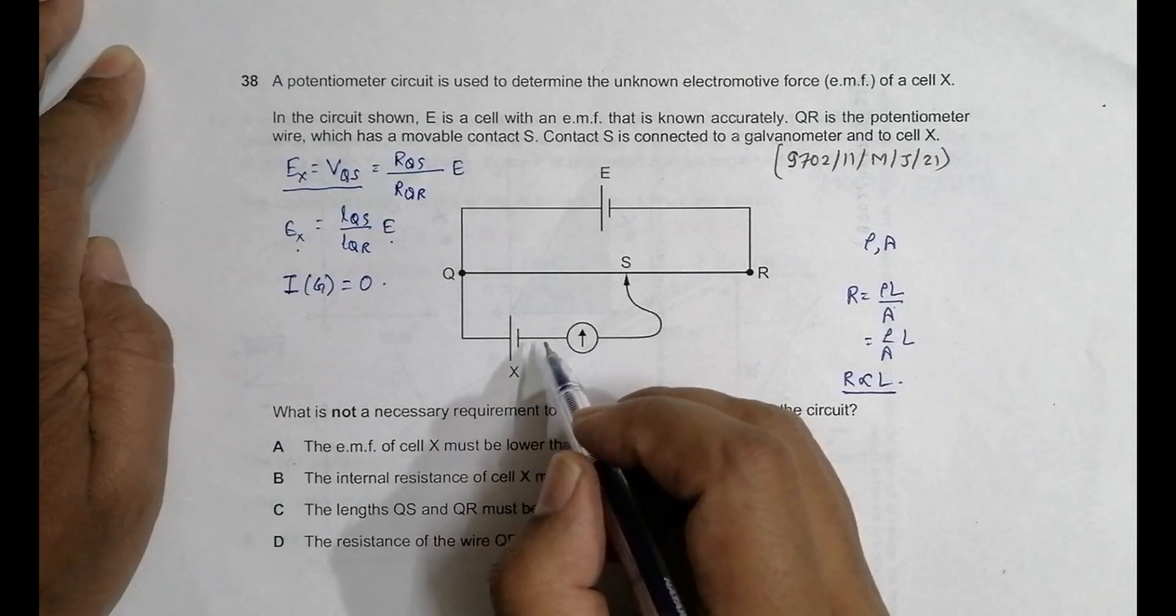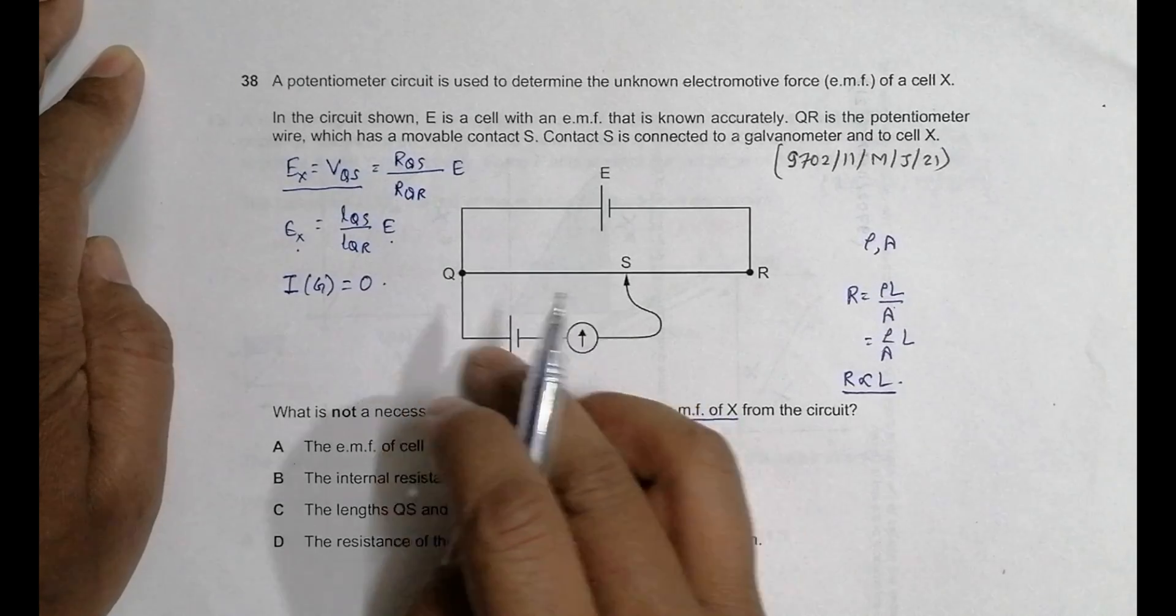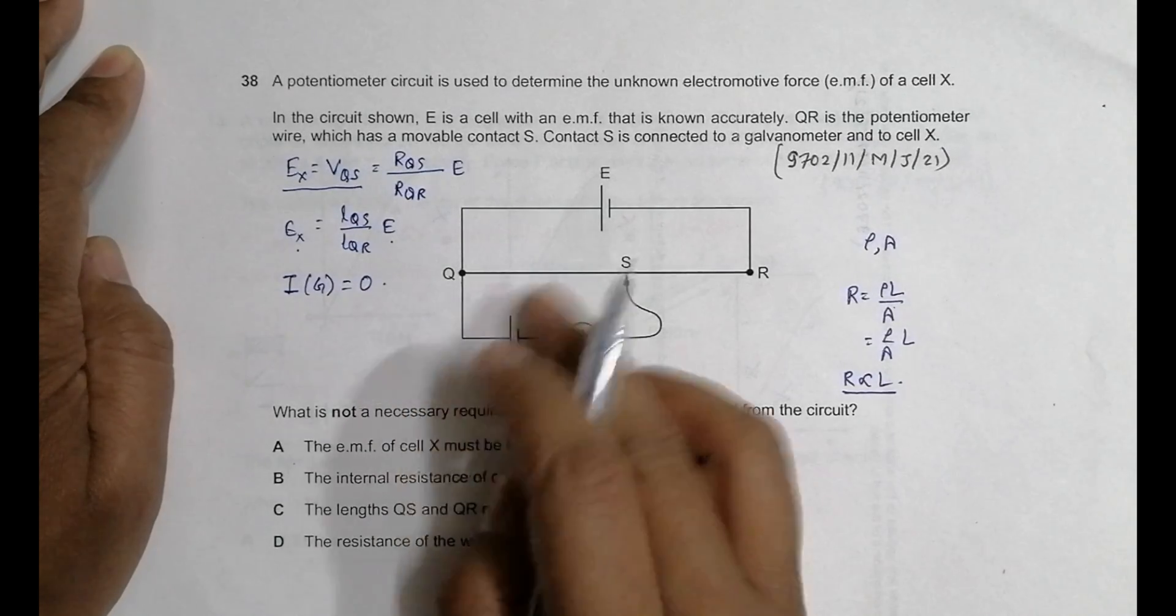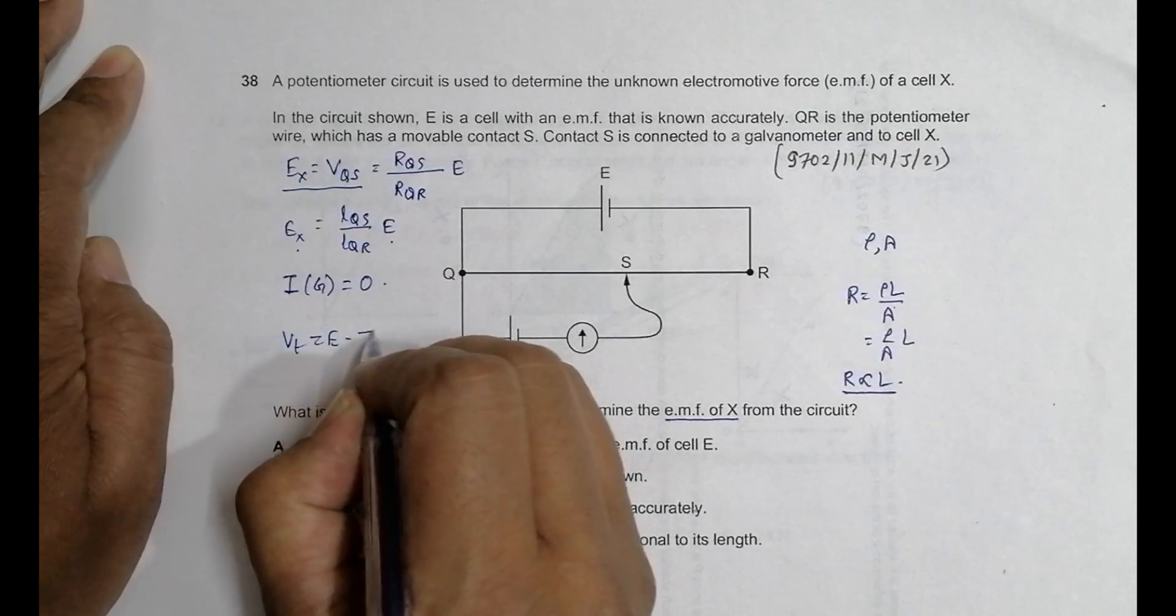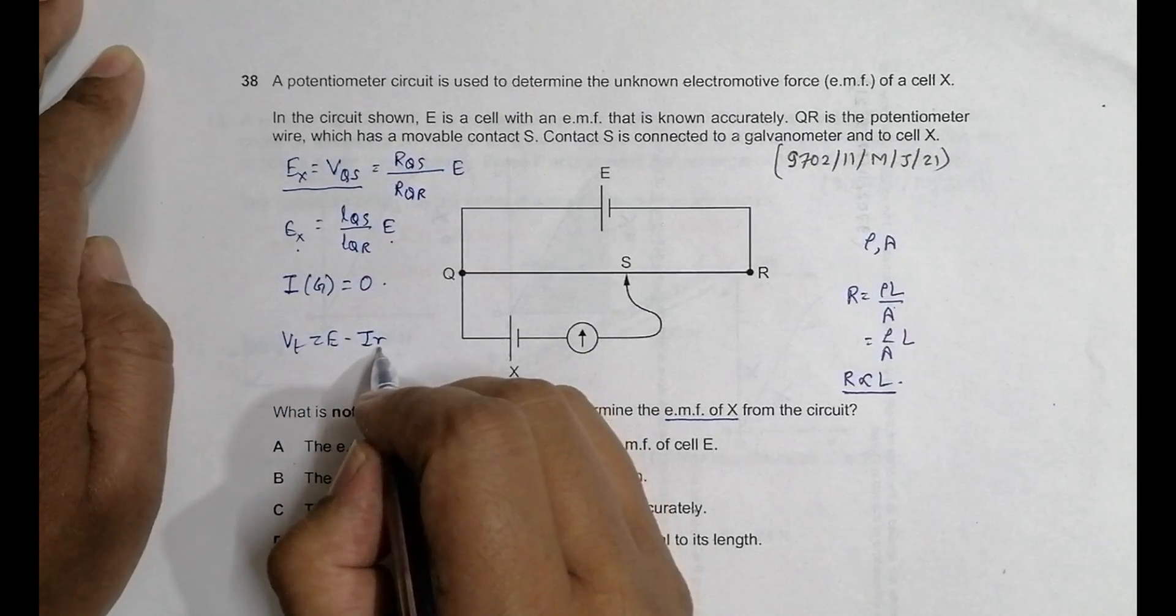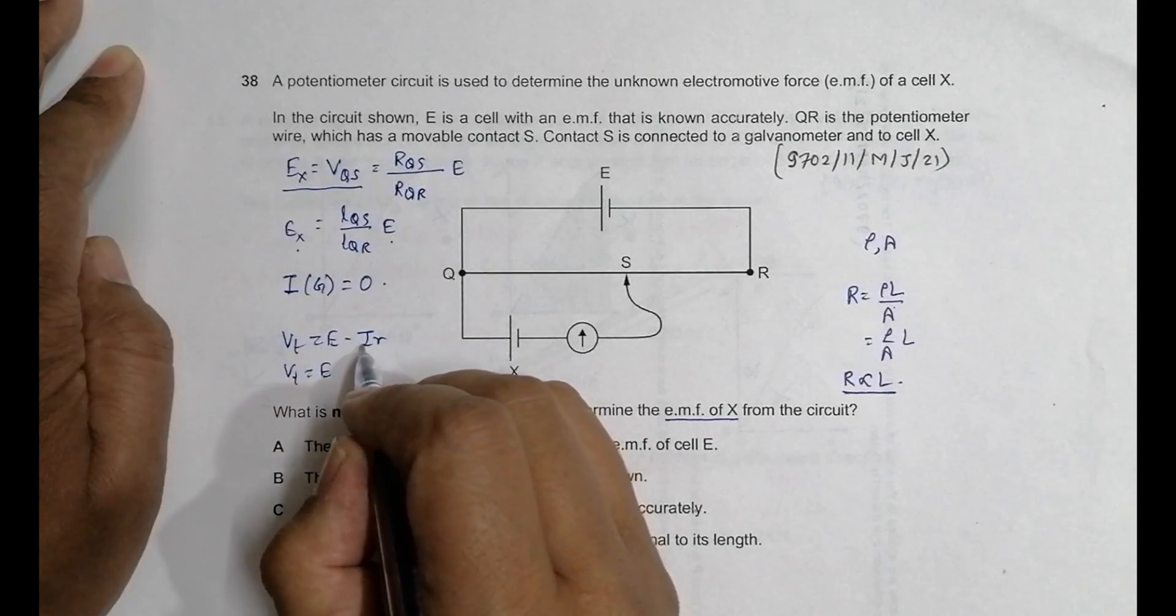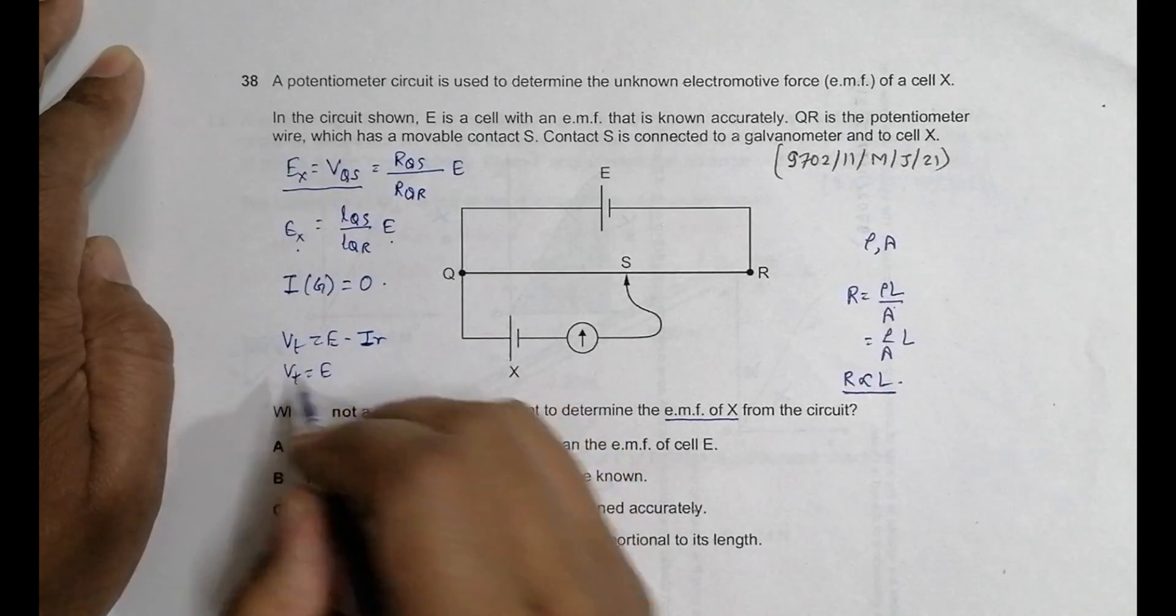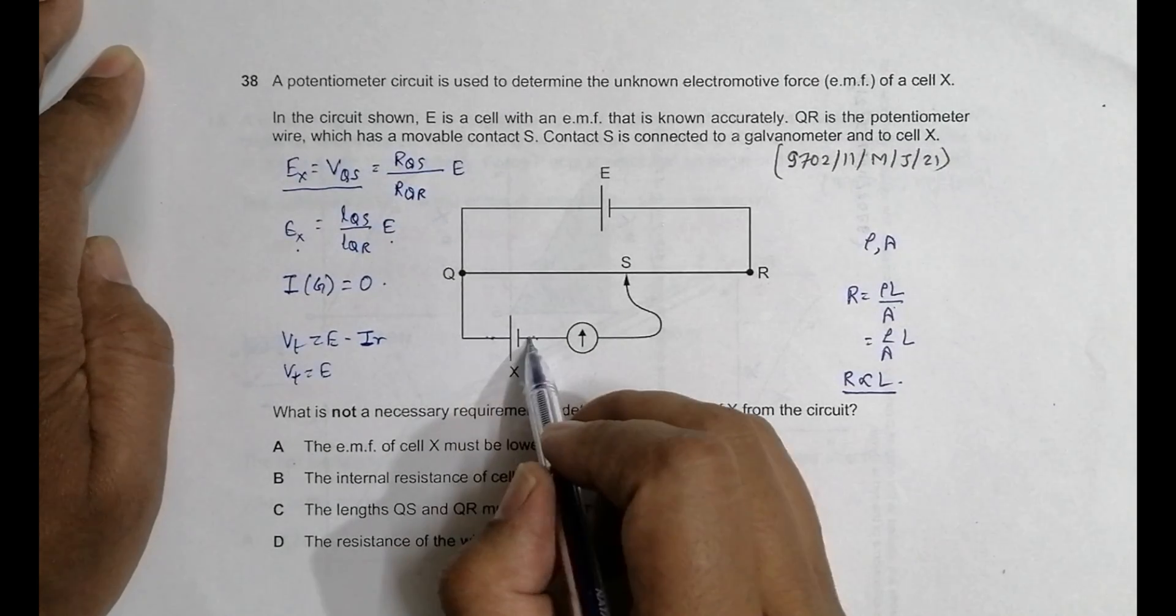When current here is 0, the inner resistance does not show its presence. It shows its presence only when there is a current flow across this cell. Because we often have a formula V terminal is equal to E minus I into R. So if I equals 0, then this VT is equal to E.